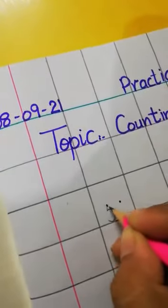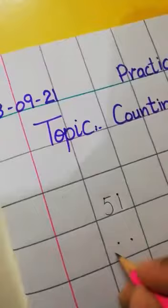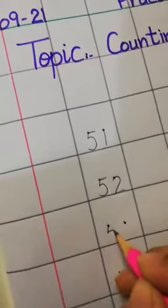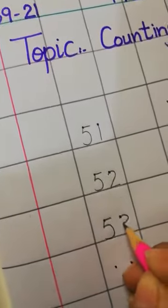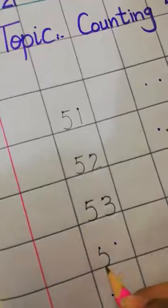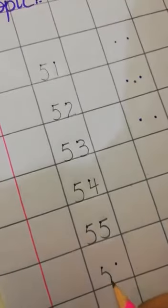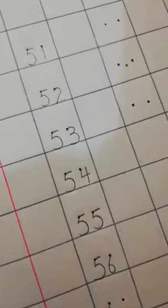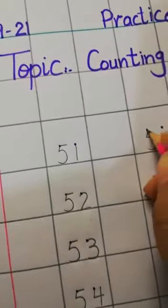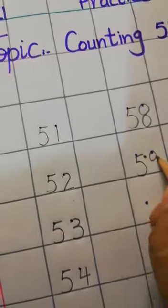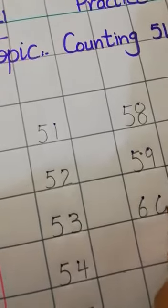Write numbers. 51-51, 52-52, 53-53, 54-54, 55-55, 56-56, 57-57, 58-58, 59-59, 60-60.